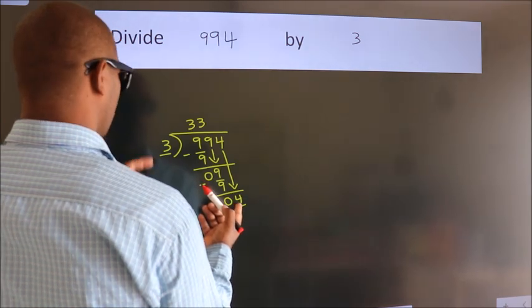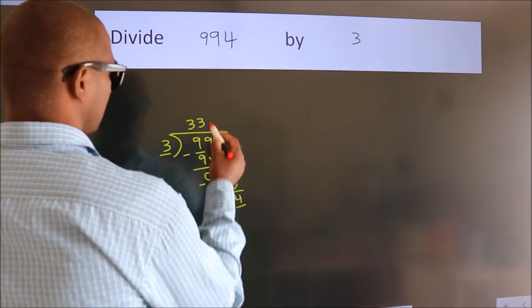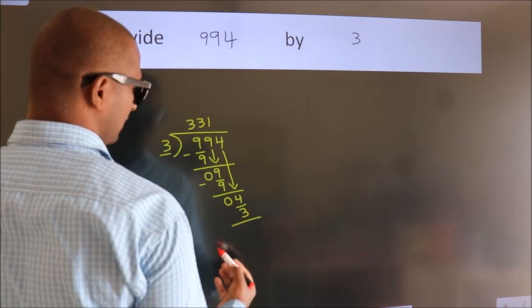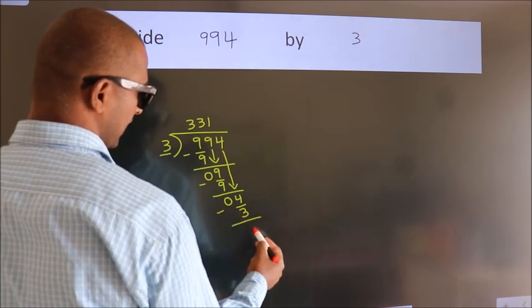A number close to 4. In 3 table is 3 once 3. Now, we subtract. We get 1.